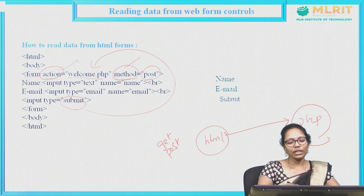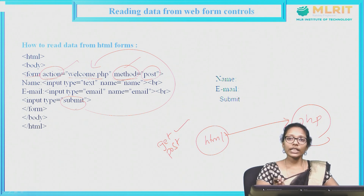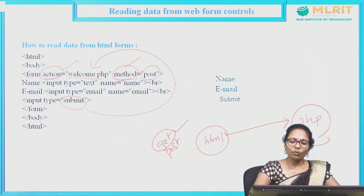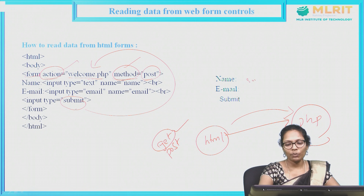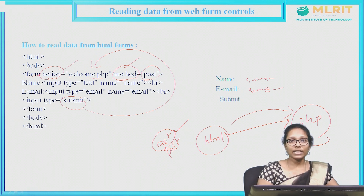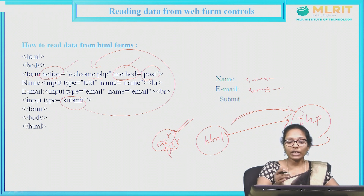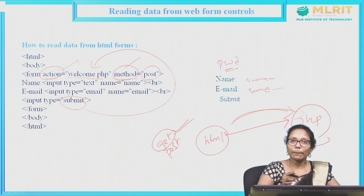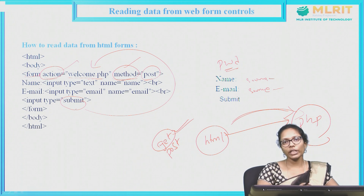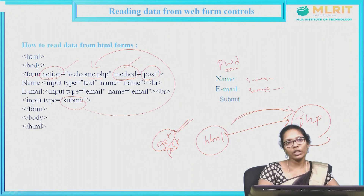If I do not write any method, by default the method is GET. If I use GET method, whatever data you are giving, the same thing will be transferred — for example, name as Soumya and email as Soumya at gmail dot com. Without encryption or any security, the data will be transferred to PHP when you use GET method. If you have a field like password, the password also will be sent to the PHP program directly, visible to all users. There is no security when you use the GET method.